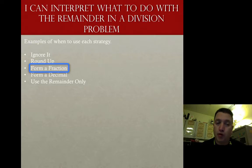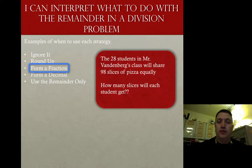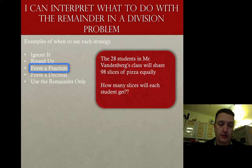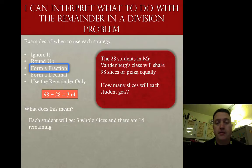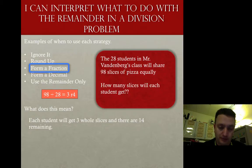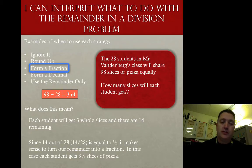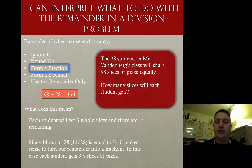Another option is to form a fraction. The 28 students in Mr. Vandenberg's class will share 98 slices of pizza equally. How many slices will each student get? When I do the division, I get three with a remainder of 14. Each student will get three whole slices of pizza, and there are 14 remaining. Since 14 out of 28, or 14/28, is equal to one half, it makes sense to turn this remainder into a fraction. Each student is going to get three and a half slices of pizza.